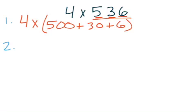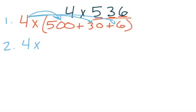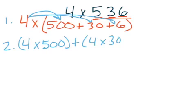Our second step is for us to distribute. We have to take our four and distribute it to our five hundred, to our thirty, and to our six. So it looks something like this: four times five hundred, plus four times thirty, plus four times six.